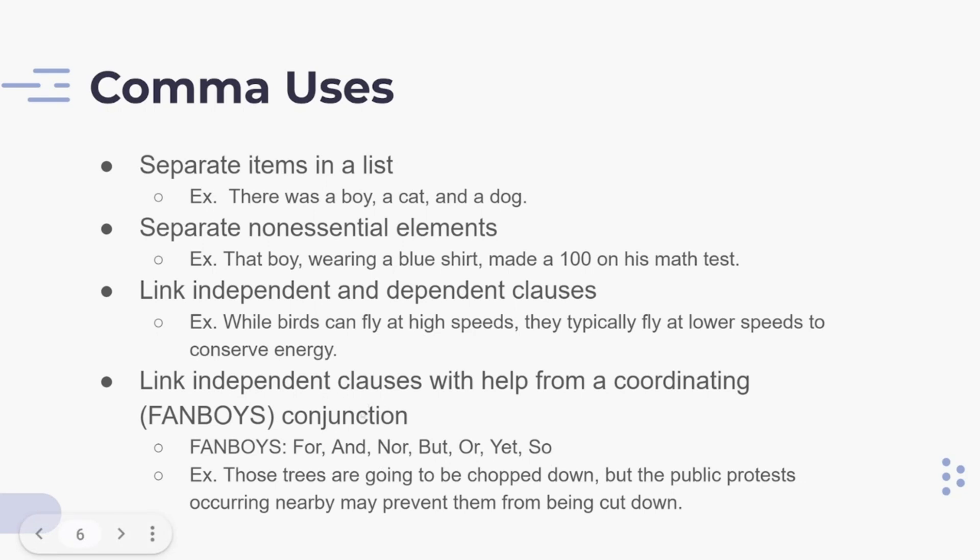To link two independent clauses, you have to use a comma and a coordinating conjunction. In this example, those trees are going to be chopped down, but the public protests occurring nearby may prevent them from being cut down. These are two independent clauses connected by a comma and a coordinating conjunction, in this case, but.